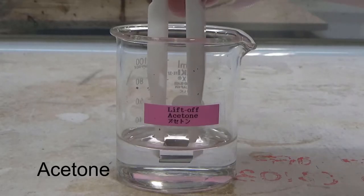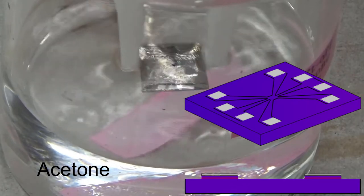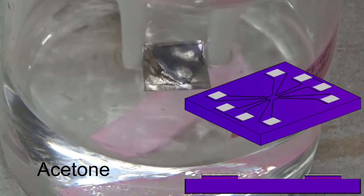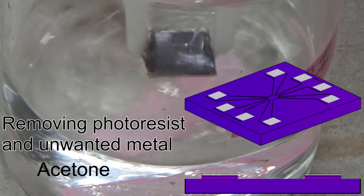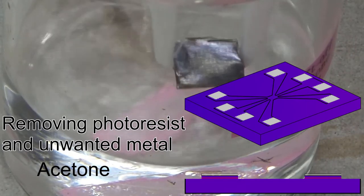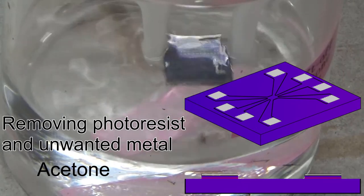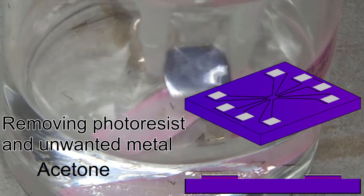Next, we dissolve away the photoresist, which also removes the metal that was deposited on top of the photoresist. The metal that remains on the chip will become the electrodes of the device.